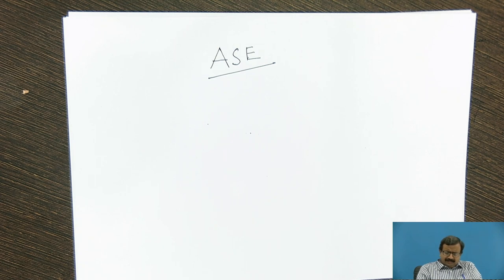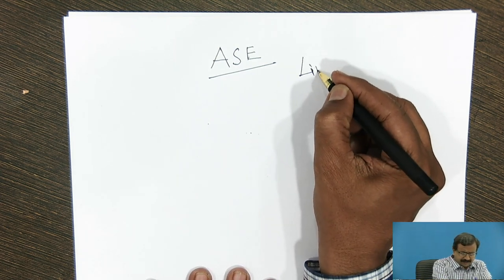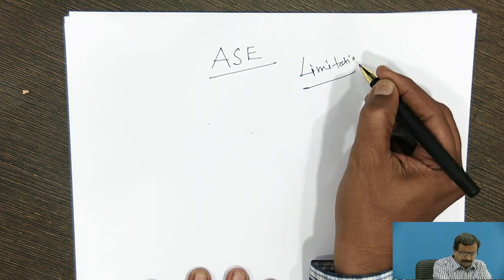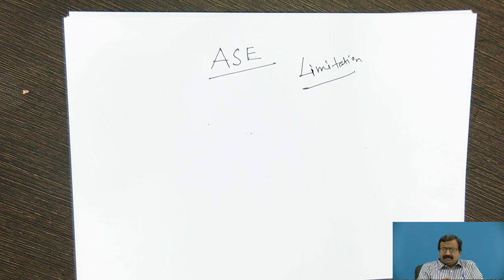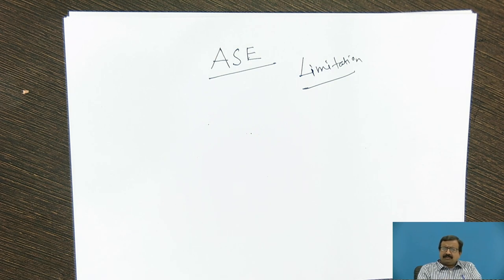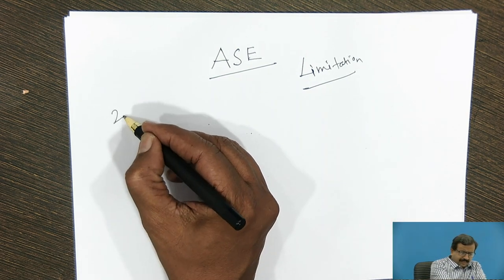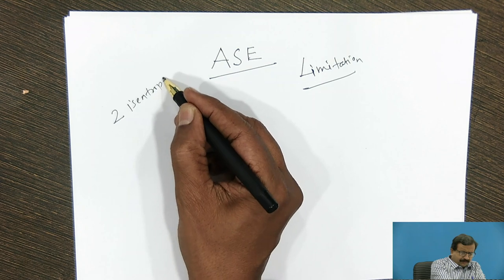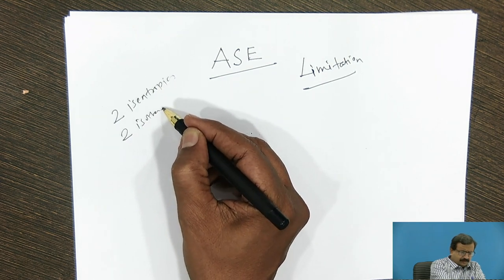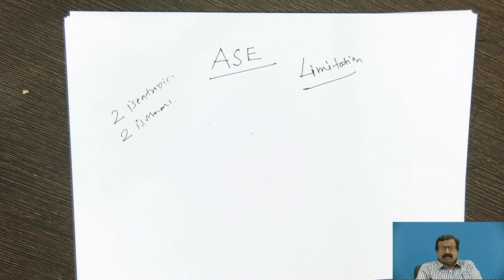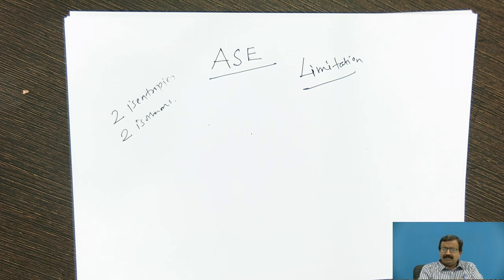Now, one limitation of the Carnot cycle. What are the processes in the Carnot cycle? There are two isentropics and two isotherms. But how are they connected? Whether isentropic is connected to isentropic, or isentropic is connected to isothermal?